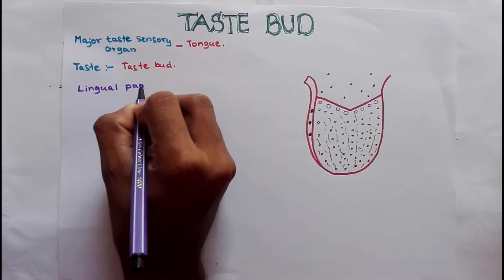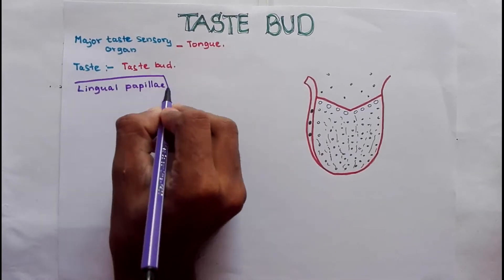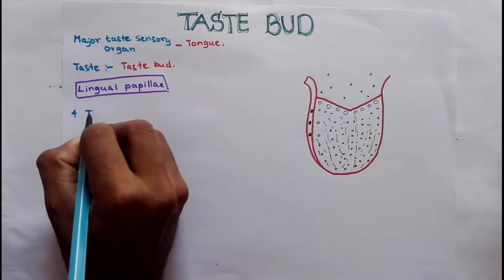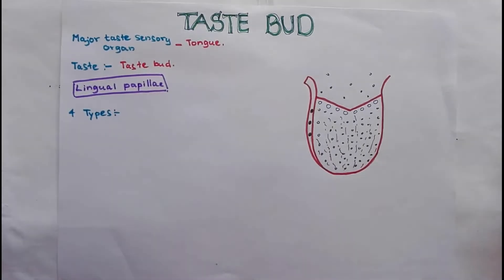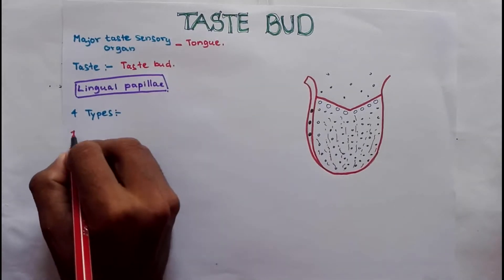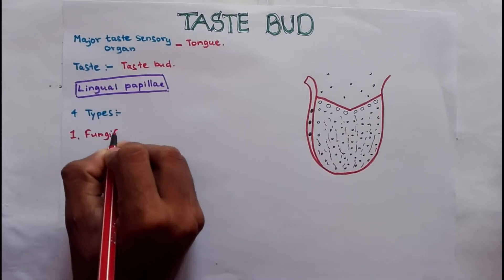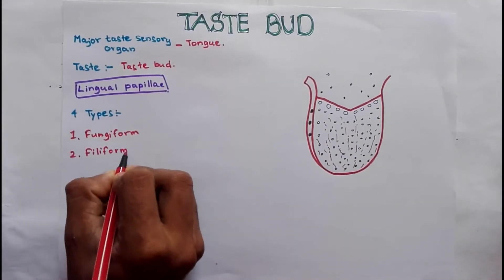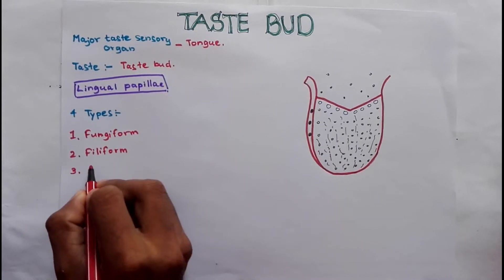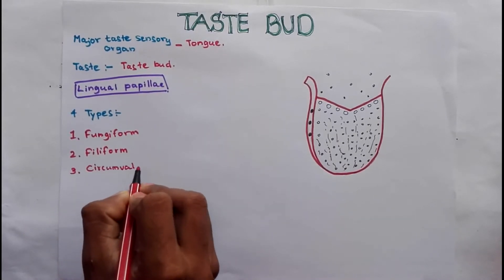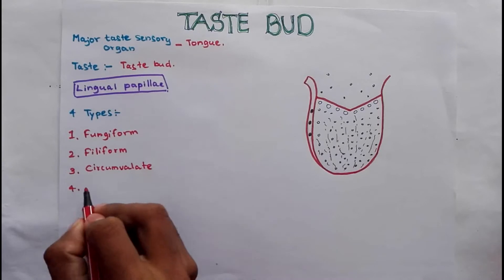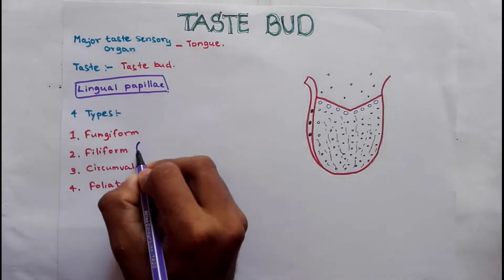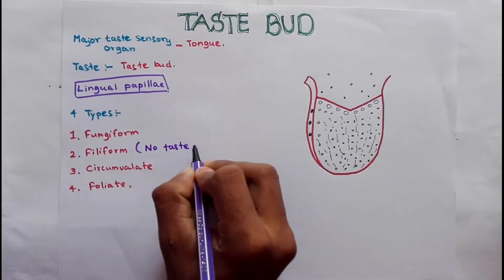There are four types of lingual papillae: fungiform papillae, filiform papillae, circumvallate papillae, and foliate papillae. Remember that filiform papillae do not contain taste buds.